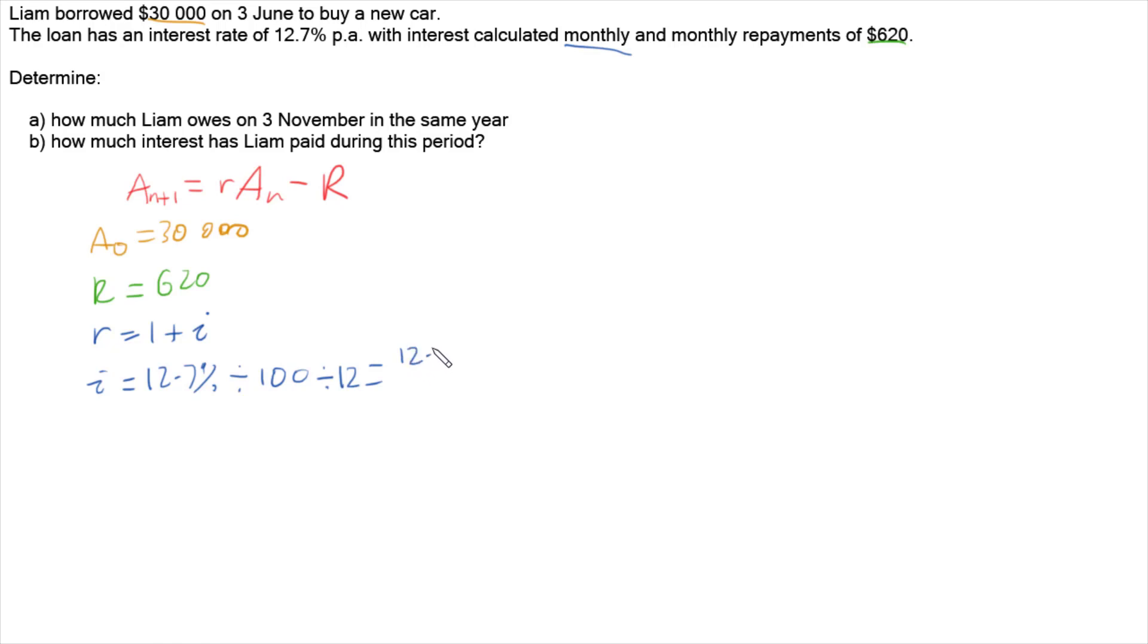So i is 12.7 over 1200. So when we write little r, it's going to be 1 plus 12.7 over 1200.